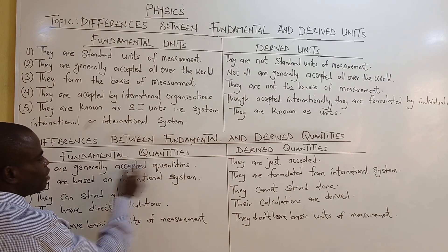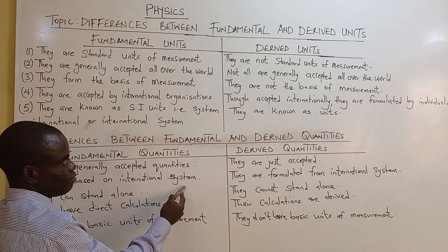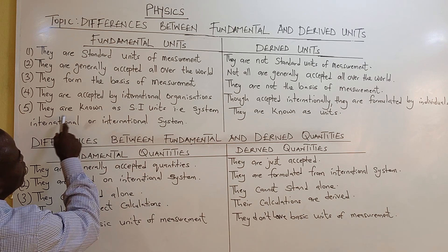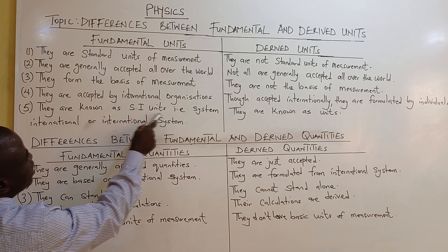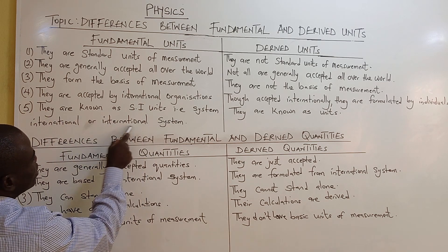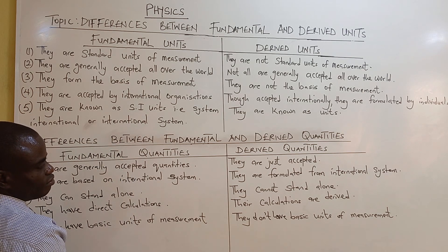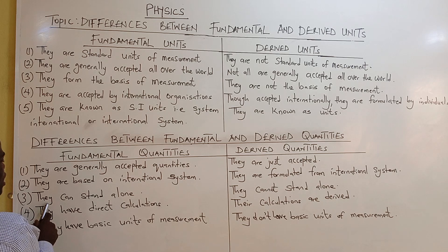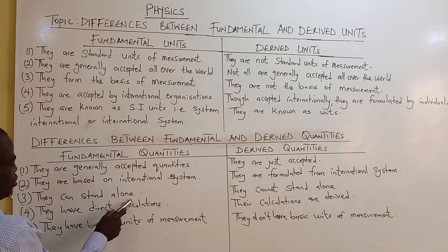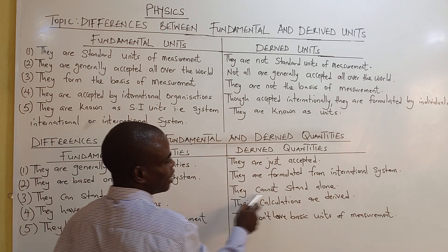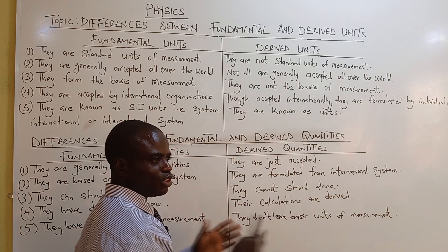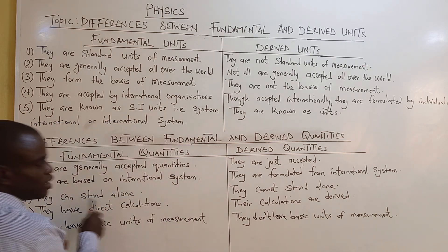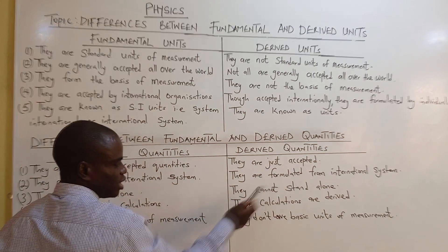Fundamental quantities are referred to as international system, or SI units — that is, Système International. Derived units are simply known as units. Fundamental quantities can stand alone, but derived quantities cannot stand alone — they are obtained by simple combinations of the fundamental quantities.